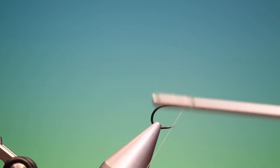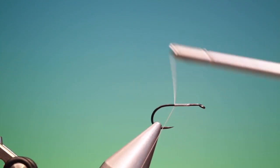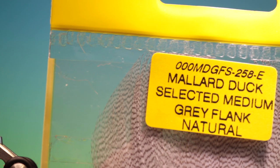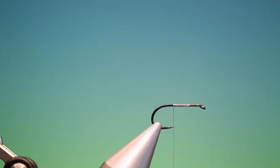We'll attach our tying thread and go back to about the barb at the hook point, then a couple wraps more. Now what we want is some selected mallard flank - this is the best stuff to use.